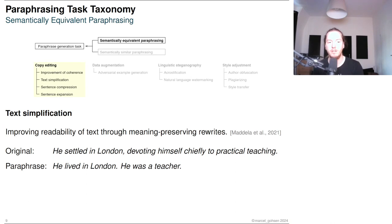Text simplification is a similar copy editing task that focuses on the readability of single sentences. When a sentence is simplified, the meaning should be preserved, which makes it a paraphrasing task. The example shows a simplified original sentence.